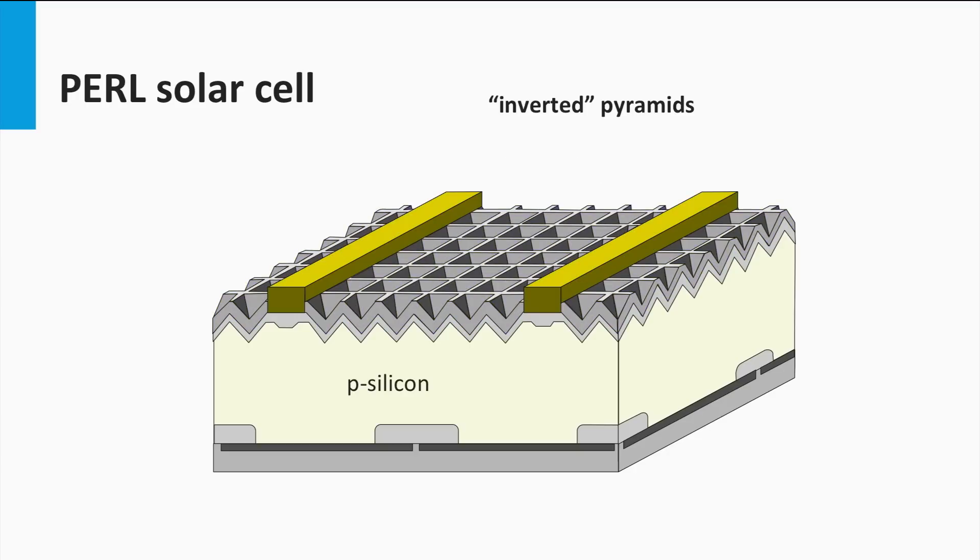Thirdly, the contact area at the front side has to be as small as possible to reduce the shading losses. In the PEARL concept, these very thin and fine metal fingers are processed using photolithography technology.